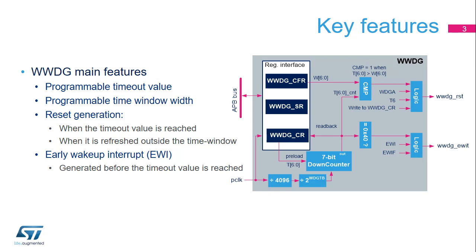As shown in the figure, the Window Watchdog uses the APB clock, or PCLK, as reference clock for its time base. The PCLK is provided by the RCC block. This clock is divided by 4096 and by a value programmed by the application. The application can also program the reload value of the down-counter bits T[6:0]. The window width is controlled by bits W[6:0].